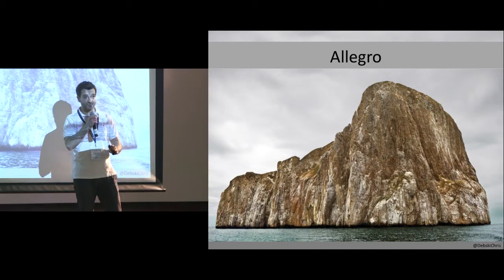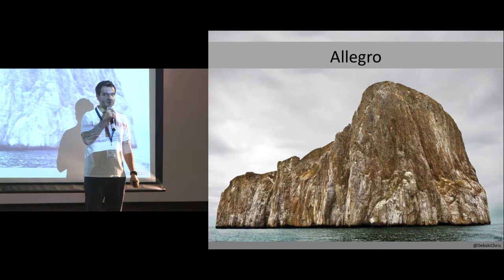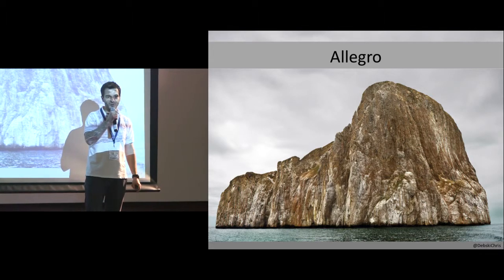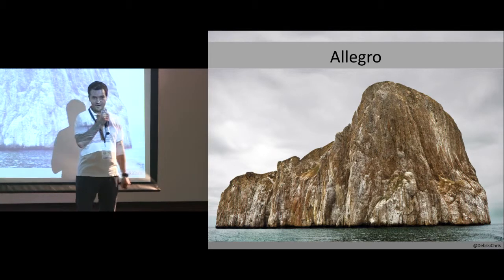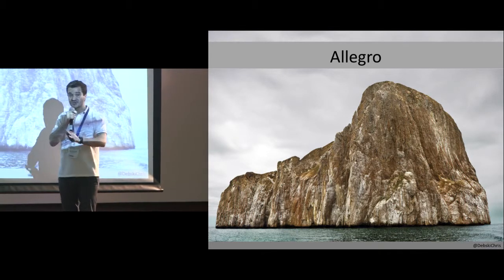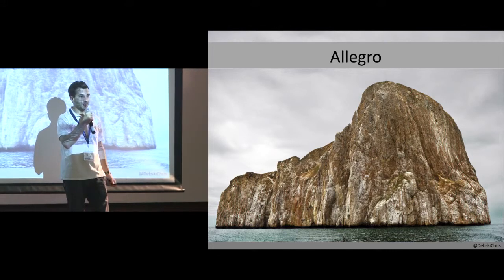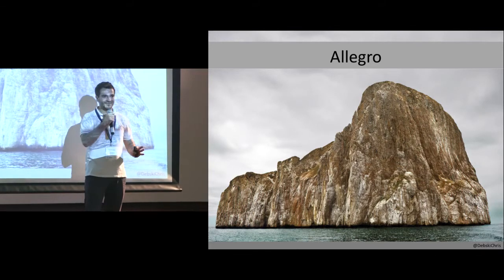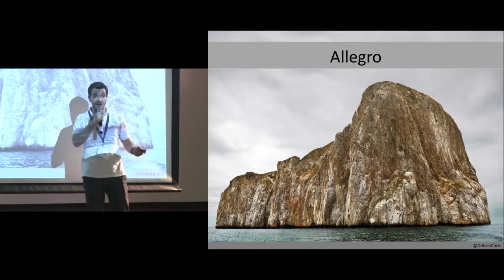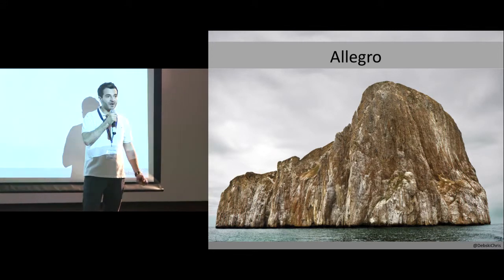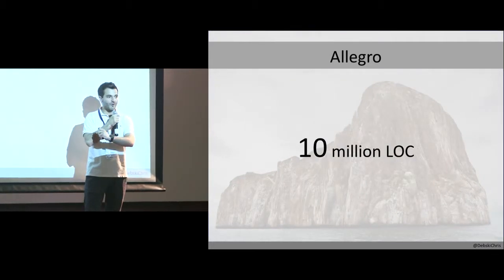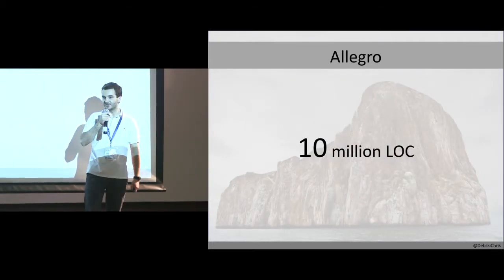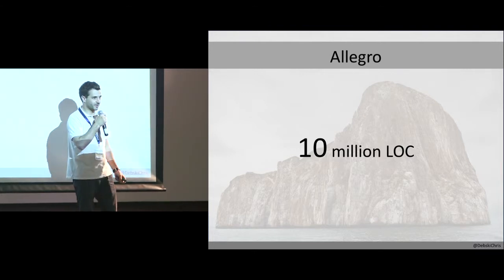Allegro — do you remember what you did 15 years ago? That was the year the Matrix entered the cinema. So 15 years ago, a couple of guys decided to build a Polish eBay and run it. They started to build a monolith, and till now we have the monolith. Allegro is one huge application that has over 10 million lines of code — it's an enormous application.